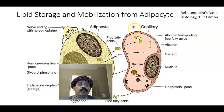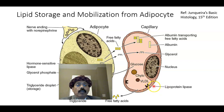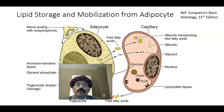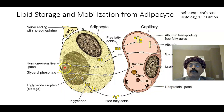Regarding lipid storage and metabolism: lipid arrives from the capillary containing chylomicron, and lipoprotein lipase acts on the chylomicron. Free fatty acids then enter the adipocyte, where they are re-esterified and stored as triglyceride droplets.